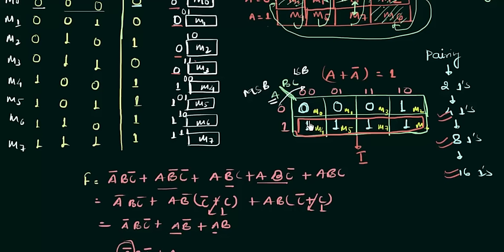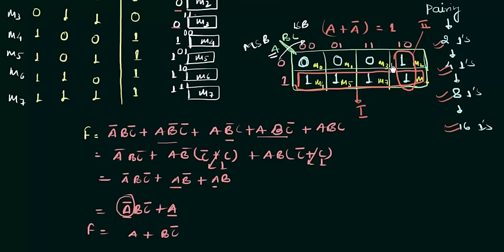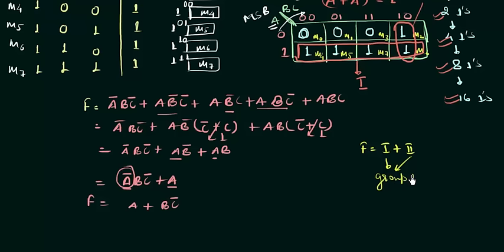We have five ones total so we cannot pair eight. We can pair four ones — I can see four ones that form a valid group. After pairing the group of four, I look for more pairs. I can see a pair of two ones. Remember: the same one can be paired more than once. For example, the one at m6 is included in the first group of four, and it can also be included in the second group of two. Once pairing is done, write f = Group1 + Group2.